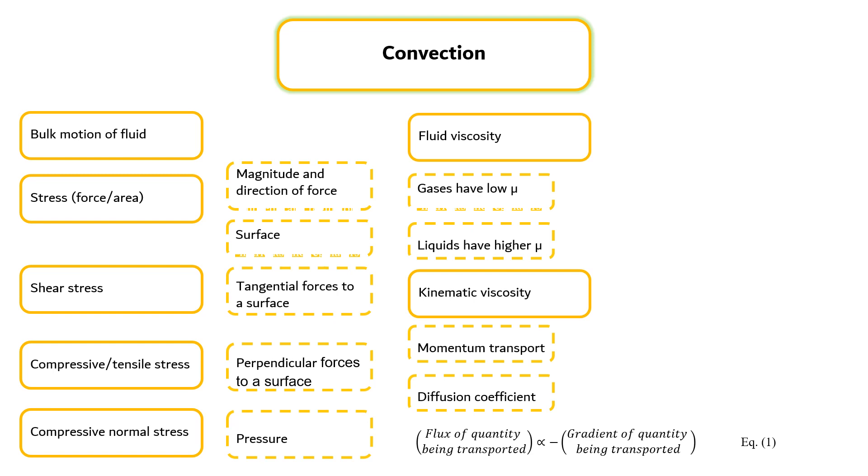The negative sign in equation 1 is used because transport occurs down a gradient, that is from a greater to a lesser magnitude of the quantity being transported. In order to render the flux a positive quantity in the direction of transport, a negative sign is often applied.